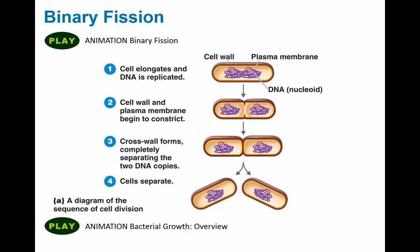This is an example with a rod-shaped cell. We can see that the DNA is in purple, the plasma membrane or cell membrane is in yellow, and the cell wall is on the outside in brown. This cell looks like it's already started to duplicate its DNA, because there's part of it here and part of it there. So DNA has to be duplicated.